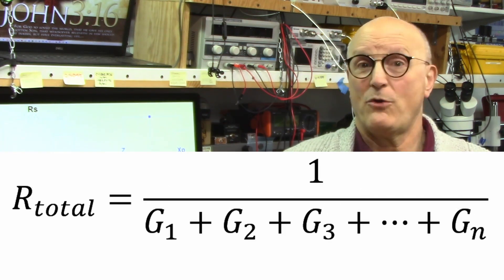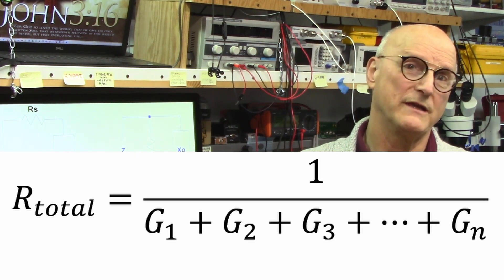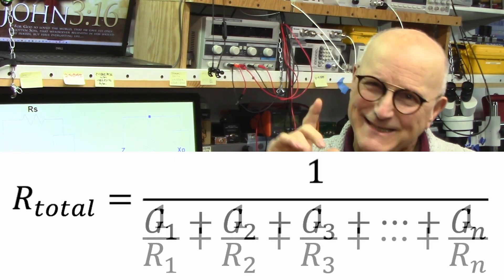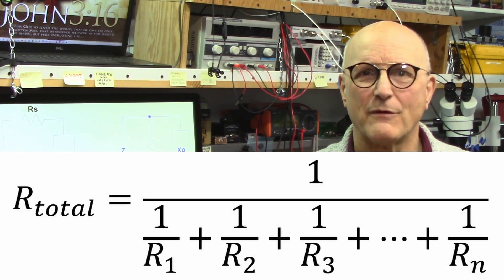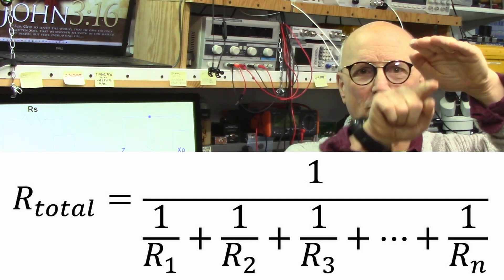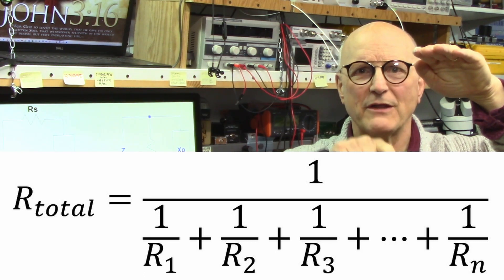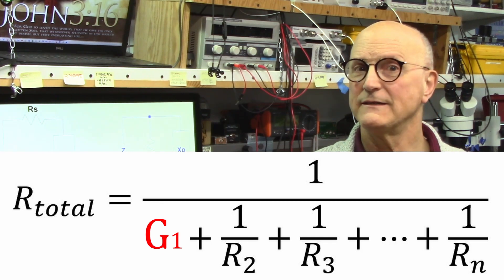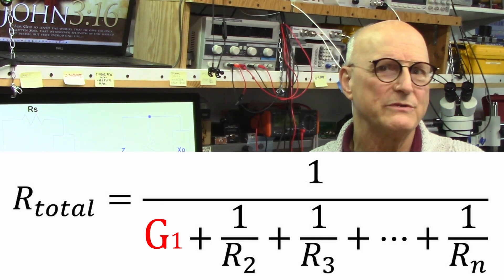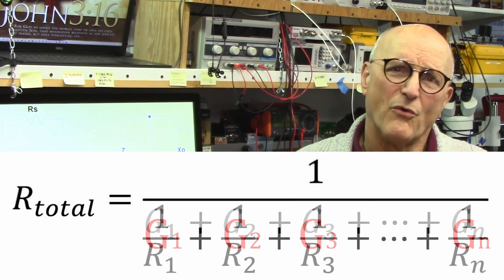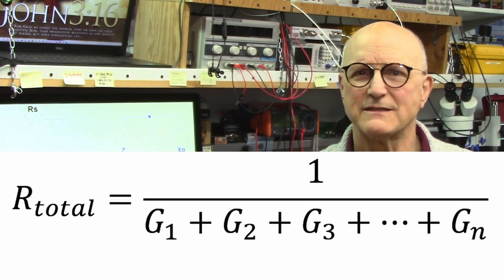And to get the final equivalent resistance, we have to convert this total conductance back into resistance by dividing it into 1. And this is exactly what we are doing when we use the standard formula for resistors in parallel, 1 divided by 1 over R1 plus 1 over R2 plus 1 over R3 and so on. 1 over R1 is the conductance of R1. 1 over R2 is the conductance of R2. So the denominator is nothing more than the sum of the conductances of the resistors.